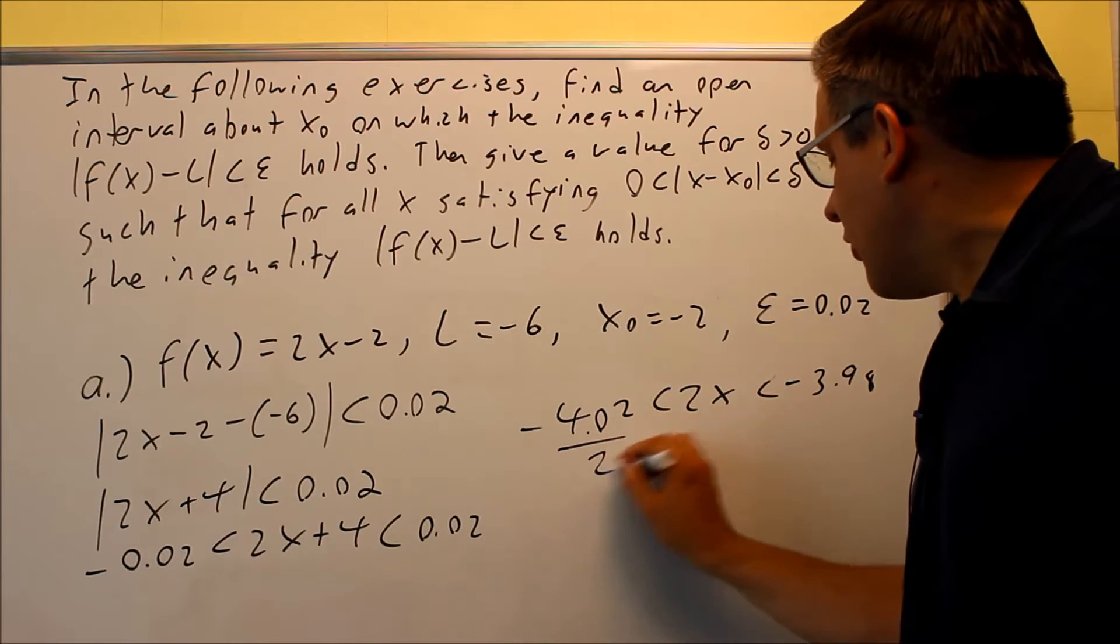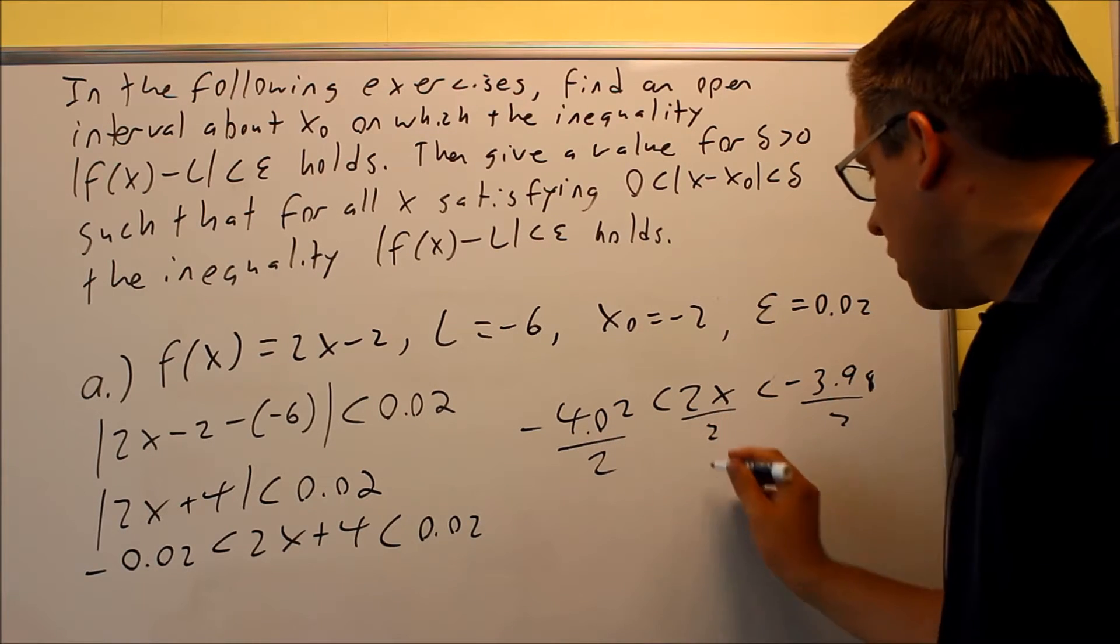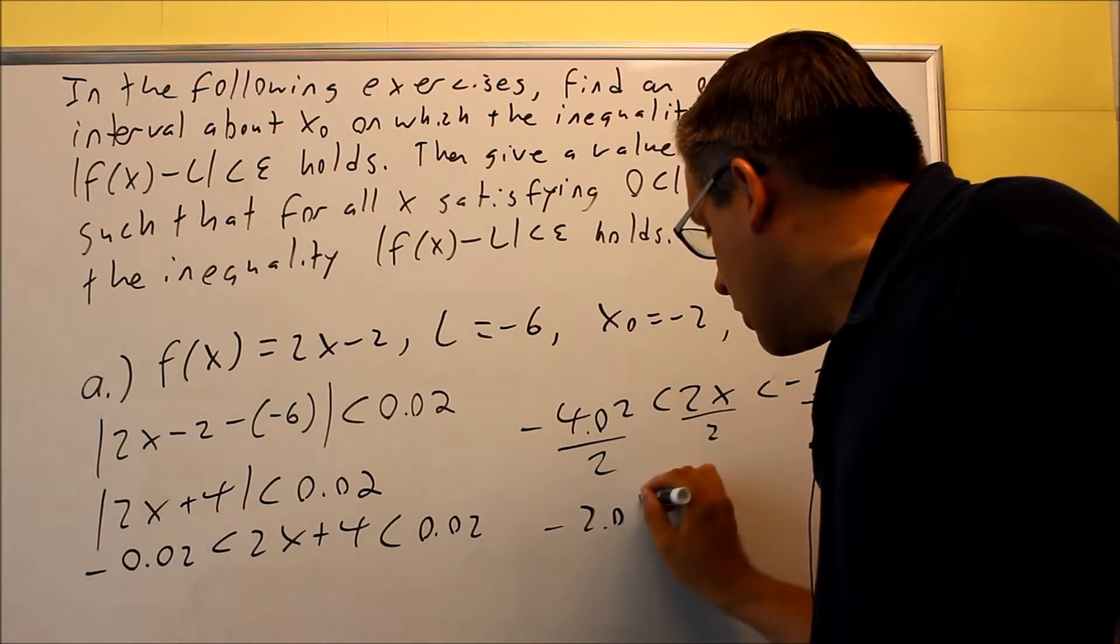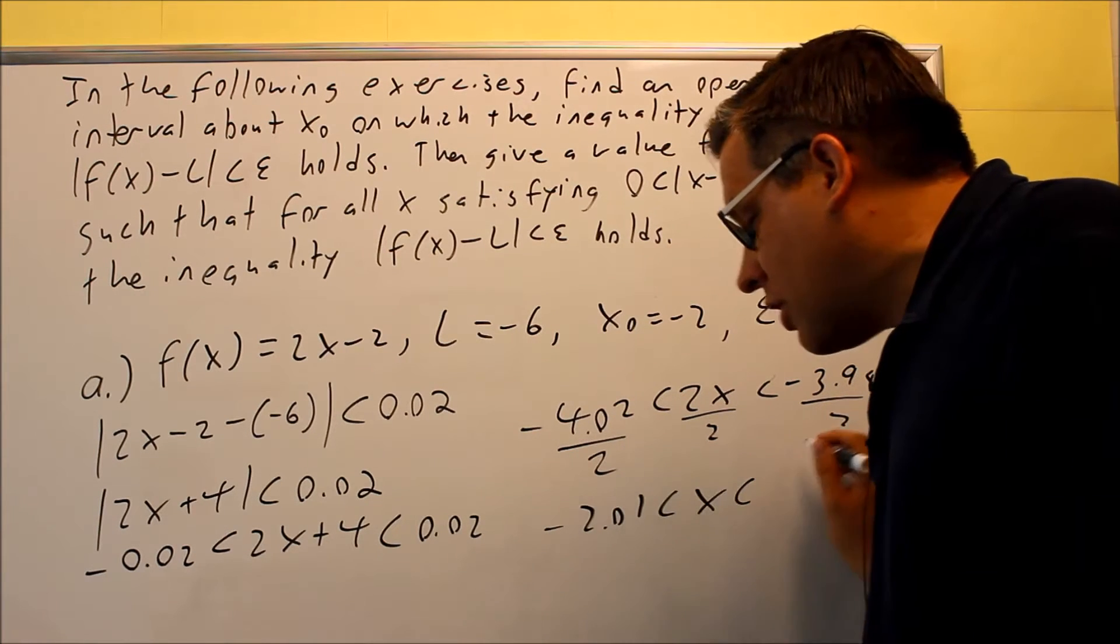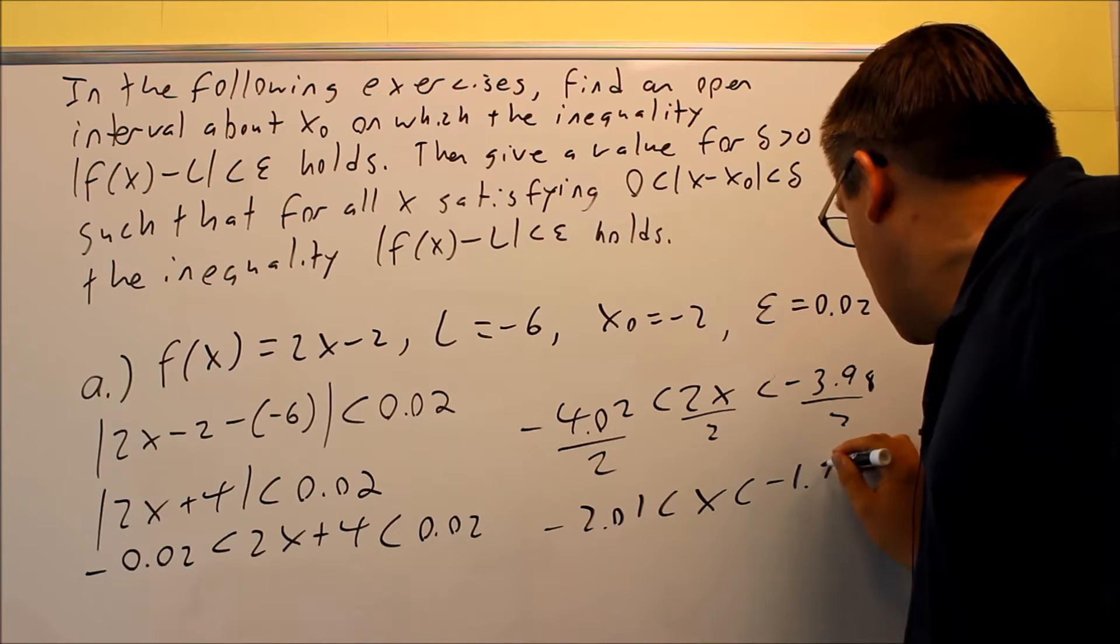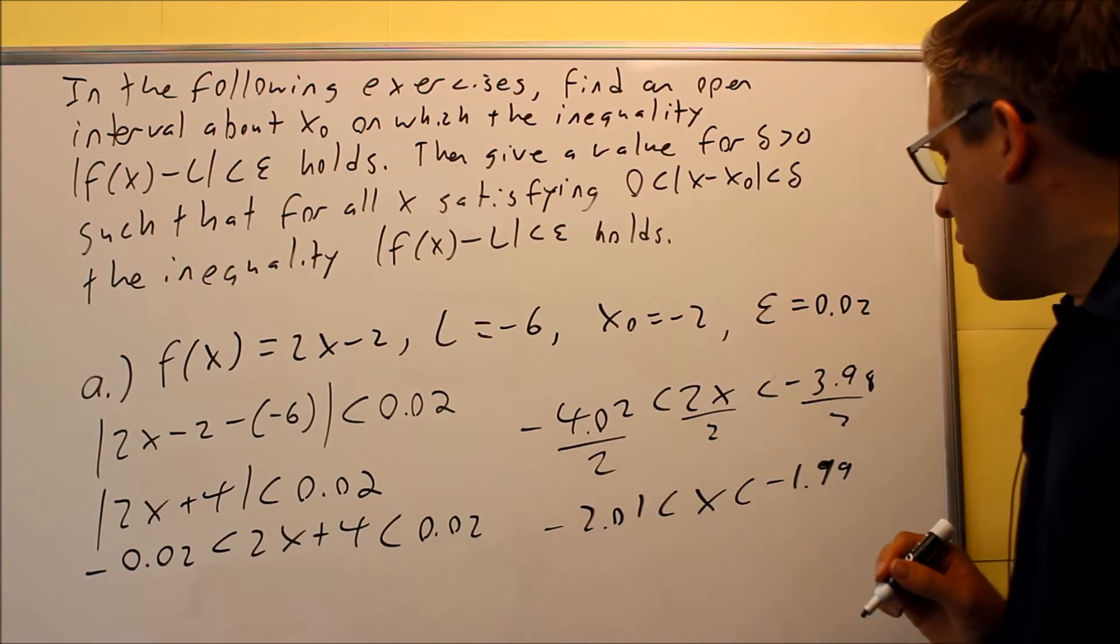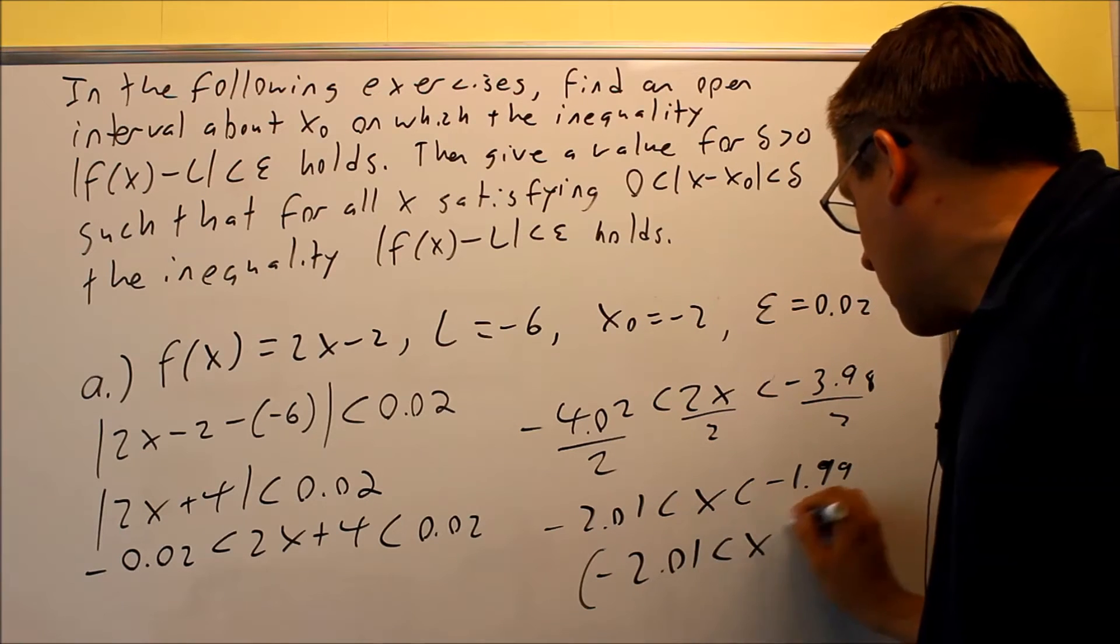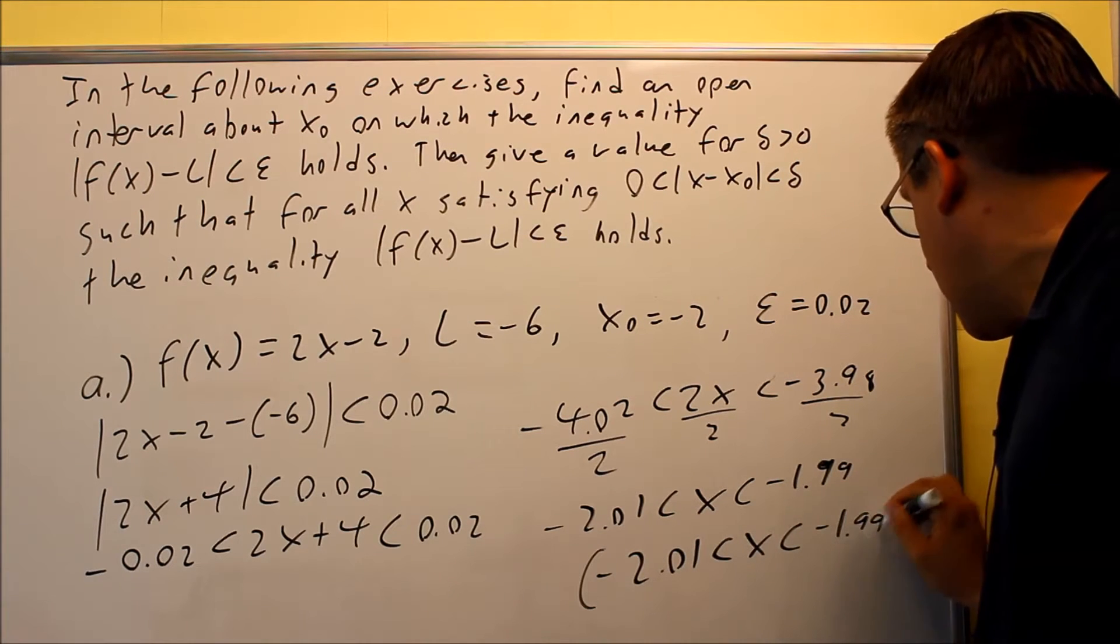The last step you want to do is divide everything by 2. And then we'll finally get our interval, negative 2.01 less than x less than negative 1.99. So then the interval itself is going to be negative 2.01 less than x less than negative 1.99.